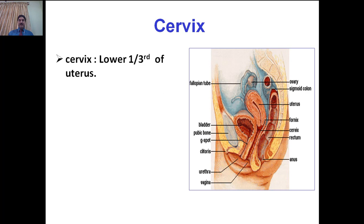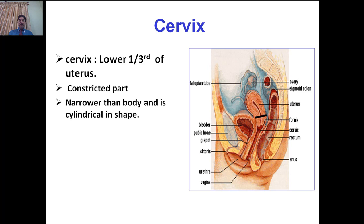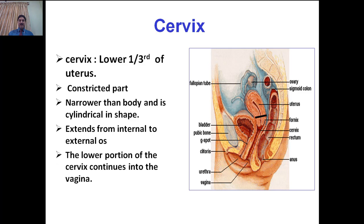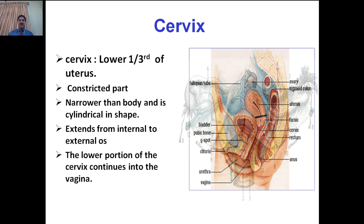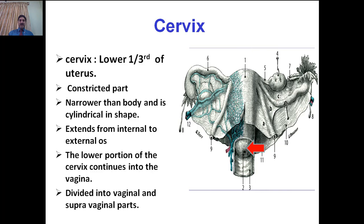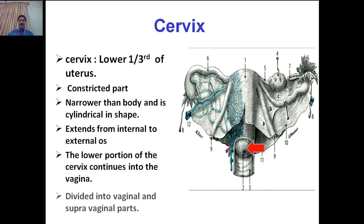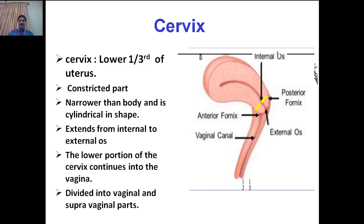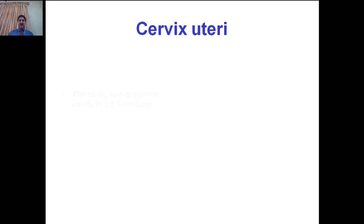The cervix forms the lower one-third of the uterus. It is a narrow, cylindrical part, narrower than the body. It extends from the internal os to the external os. The lower portion of the cervix continues into the vagina, dividing it into vaginal and supravaginal parts. The part of the cervix lying in the vagina is called the vaginal part, and the part above is the supravaginal part.